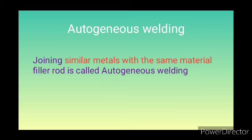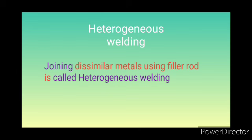The second process is heterogeneous welding. Heterogeneous welding is the joining of dissimilar metals using a filler rod. This is called heterogeneous welding — it involves different materials joined together using a filler rod.